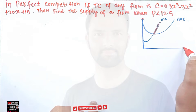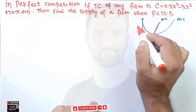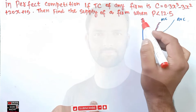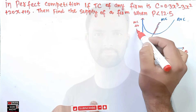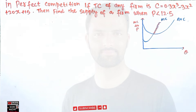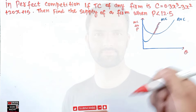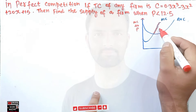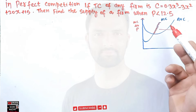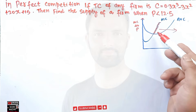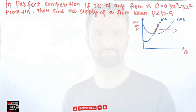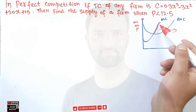On the graph, we measure MC, AVC, and price on the vertical axis and quantity Q on the horizontal axis. The firm's supply curve is the rising part of the marginal cost curve which is above the minimum of average variable cost. So first we need to find the marginal cost.